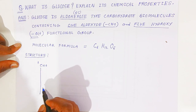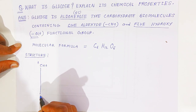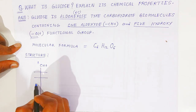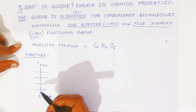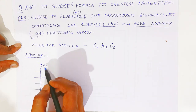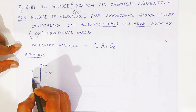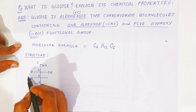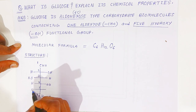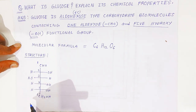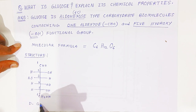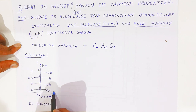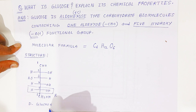This is the open chain structure of glucose. Carbon is always in a tetra-valency state. The hydroxyl groups are filled in — carbon number one is the aldehyde carbon, then carbons two, three, four, five, and six. This is the open structure of D-glucose. It is called D-glucose because the hydroxyl group on carbon five is present on the right-hand side.